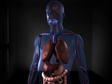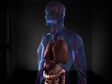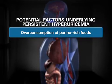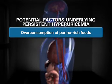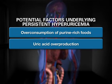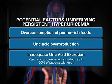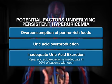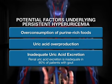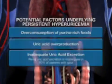A number of factors can contribute to persistently elevated serum urate levels. These include overconsumption of purine-rich foods, uric acid overproduction, and inadequate uric acid excretion. In about 90 percent of patients with gout, the primary issue is inadequate renal uric acid excretion.